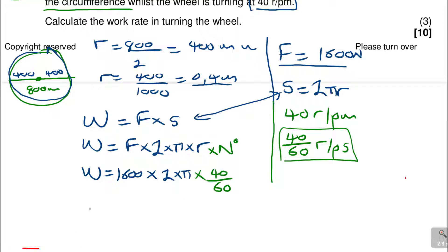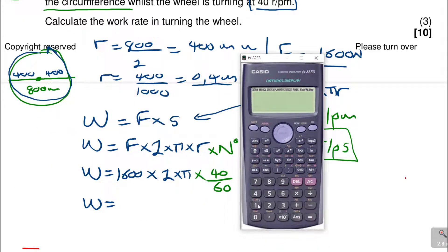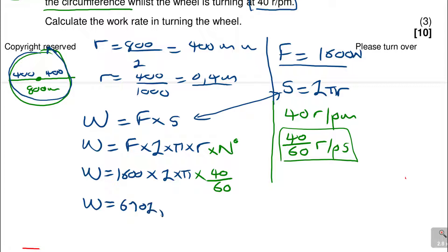So the work rate is F times 2π times r, times the rotation per second, which is 40 over 60. That gives us 1600 times 2π times 40 over 60, calculated as 6702.06 Joules per second. That is the work rate — which is effectively power.